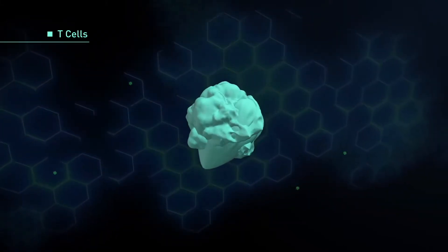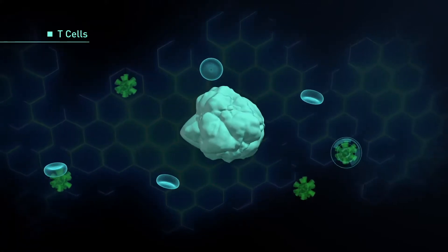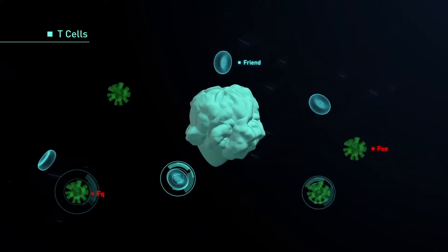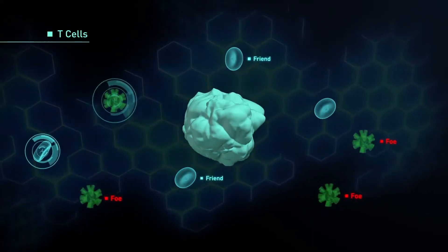T-cells. T-cells are born in the thymus gland, hence their name. They help the body distinguish between friend and foe, and work with NK cells to attack harmful invaders.